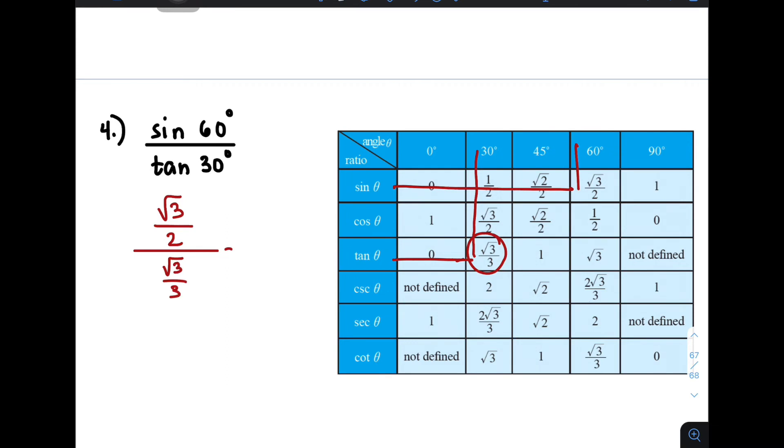And to simplify this, what you do here is copy this. So we have square root of 3 over 2 times the reciprocal of this. We'll proceed from division to multiplication. When you multiply this denominator, get its reciprocal. If this is square root of 3 over 3, its reciprocal is 3 over square root of 3.